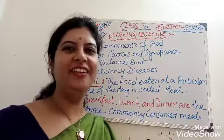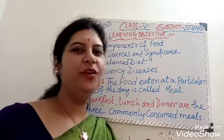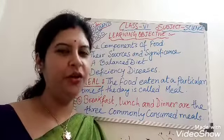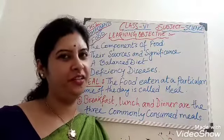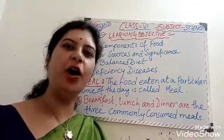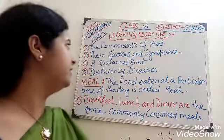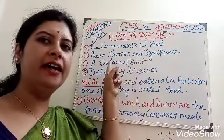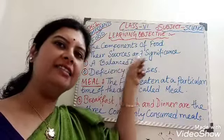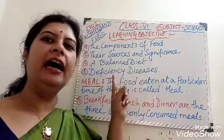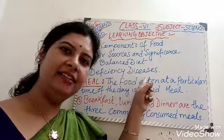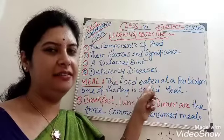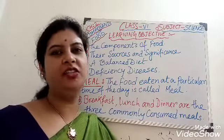Hello, my dear children. In today's science class we will discuss a new chapter — chapter number 2: Components of Food. The learning objectives are: first, the components of food, their sources and significance; a balanced diet; and deficiency diseases.